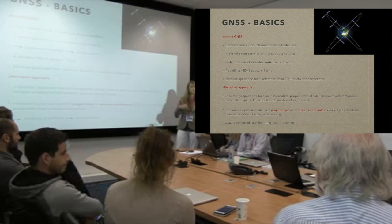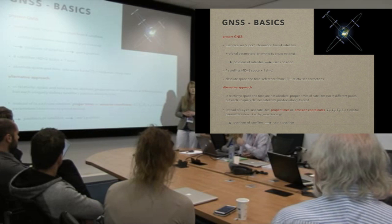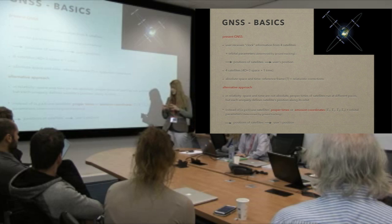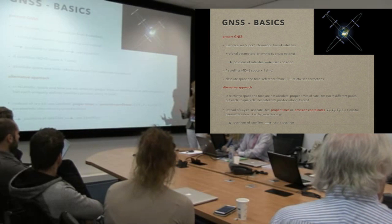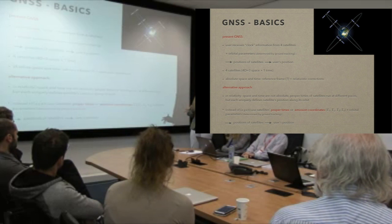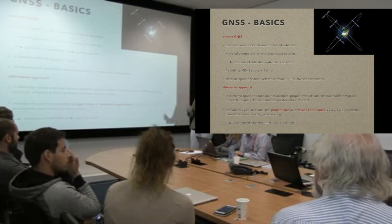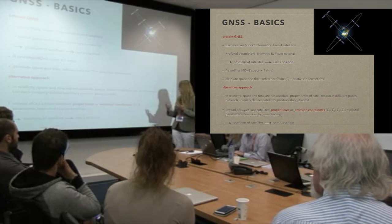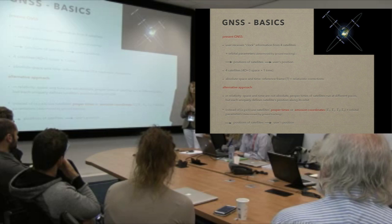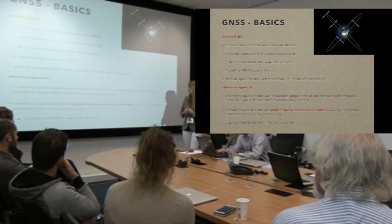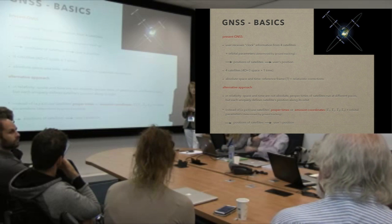The alternative approach would be to describe the system in general relativity. In relativity, space and time are not absolute, but each satellite's time is running at its own pace — we call these proper times. Although they are running at different rates, they uniquely determine the position of each satellite along its orbit. So the problem is very similar: instead of using x, y, z and t coordinates, we can use proper times or emission times of the satellites.